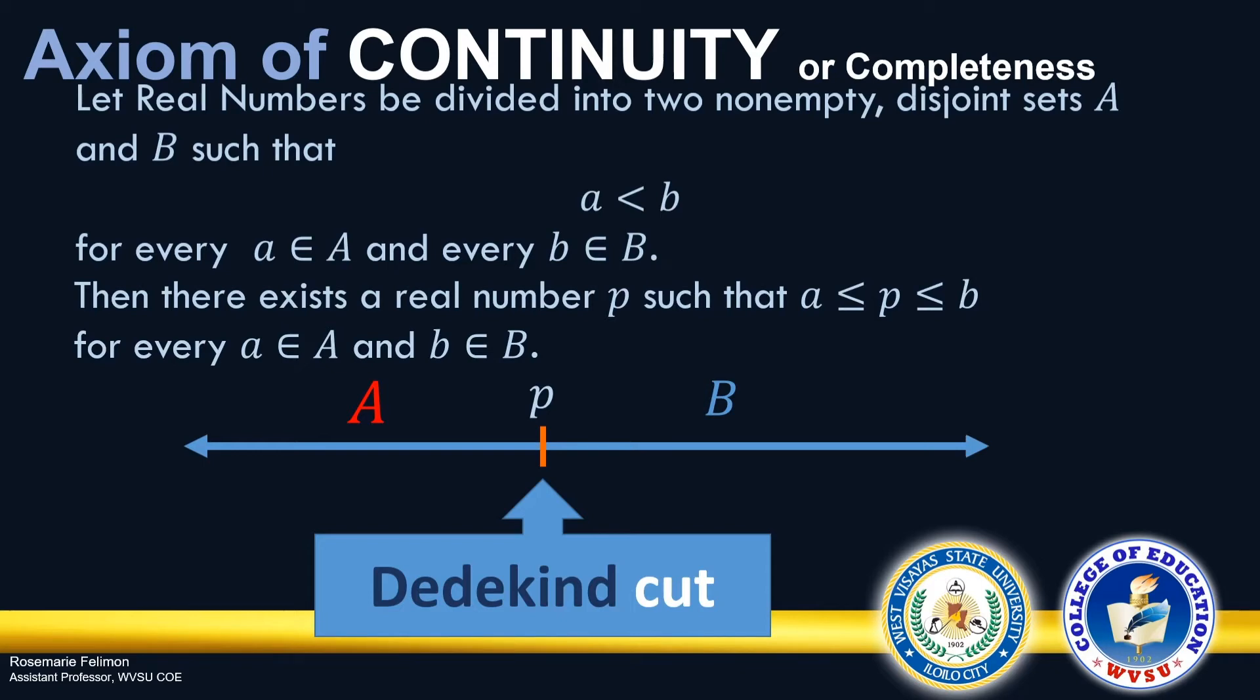It states, let real numbers be divided into non-empty disjoint sets A and B, such that all elements of A are less than all elements of B. Then there exists a real number P, such that P is between A and B, or shall we say P is less than or equal to B and greater than or equal to A. For every A, an element of A and B an element of B. So we can see P here as the one that determines the cut. It divides the set into two parts, A and B.